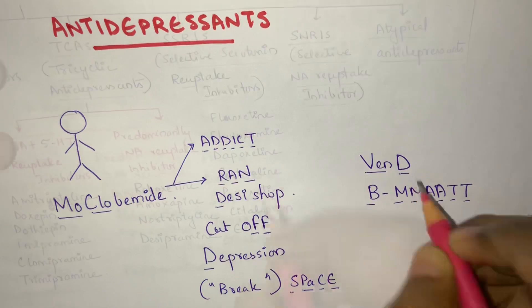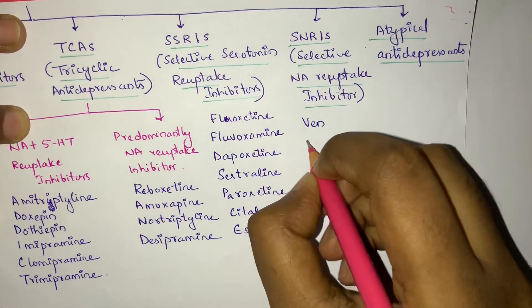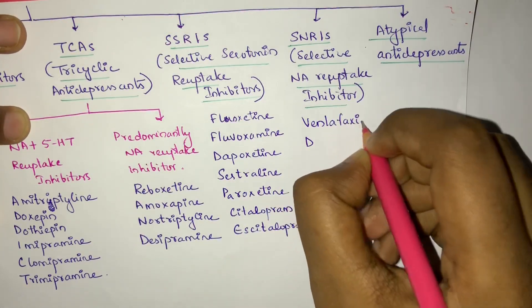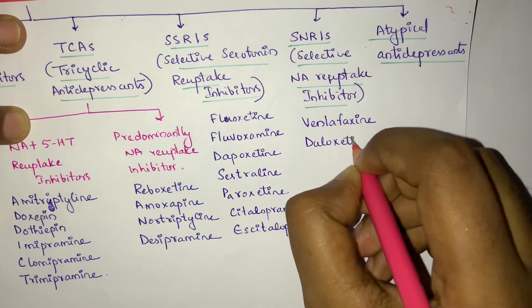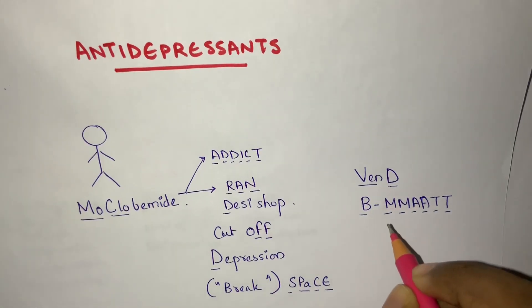Next is SNRI. We want VEND. V-E-N-D: Venlafaxine and Duloxetine.